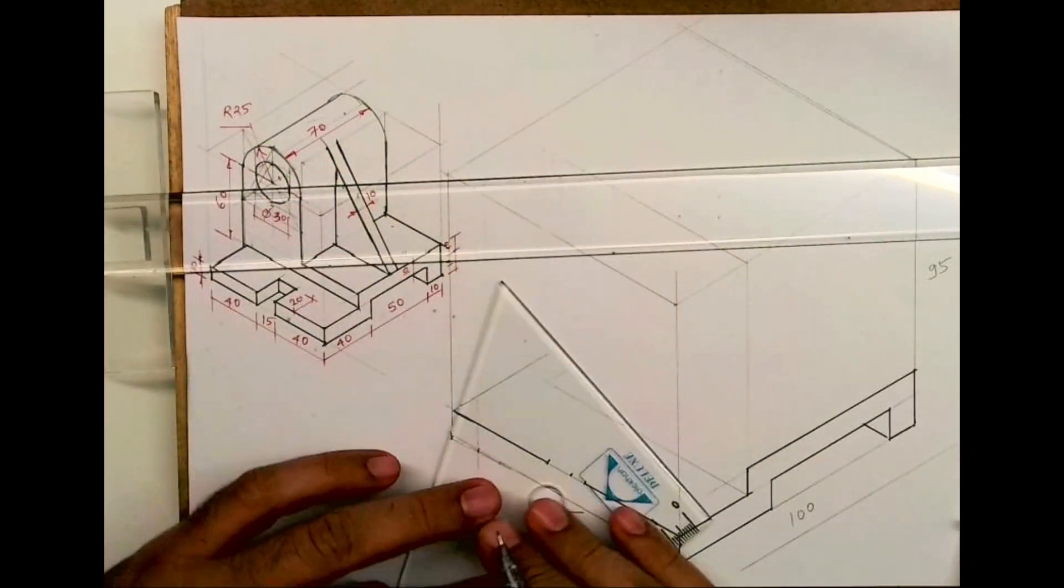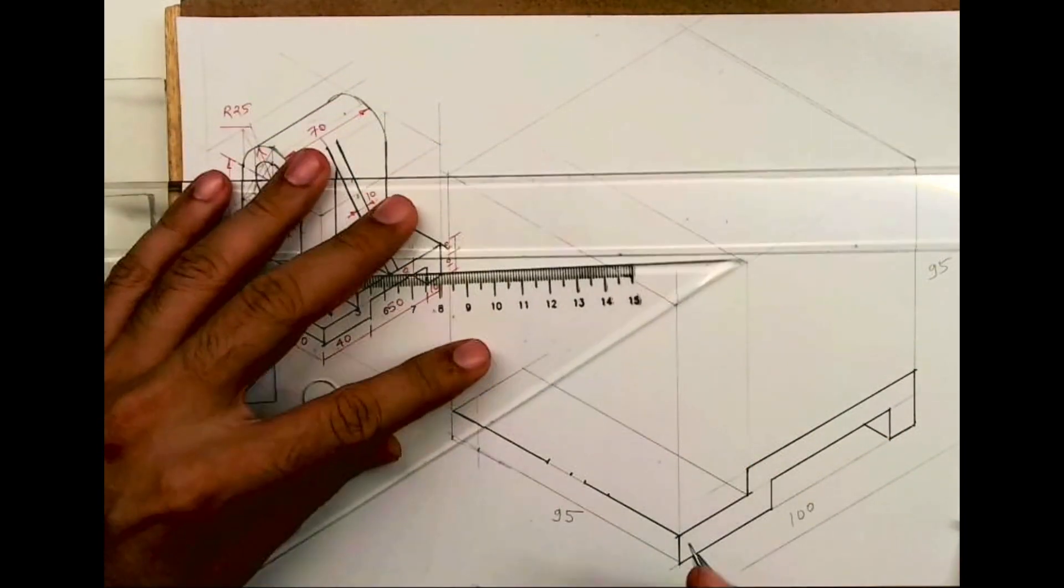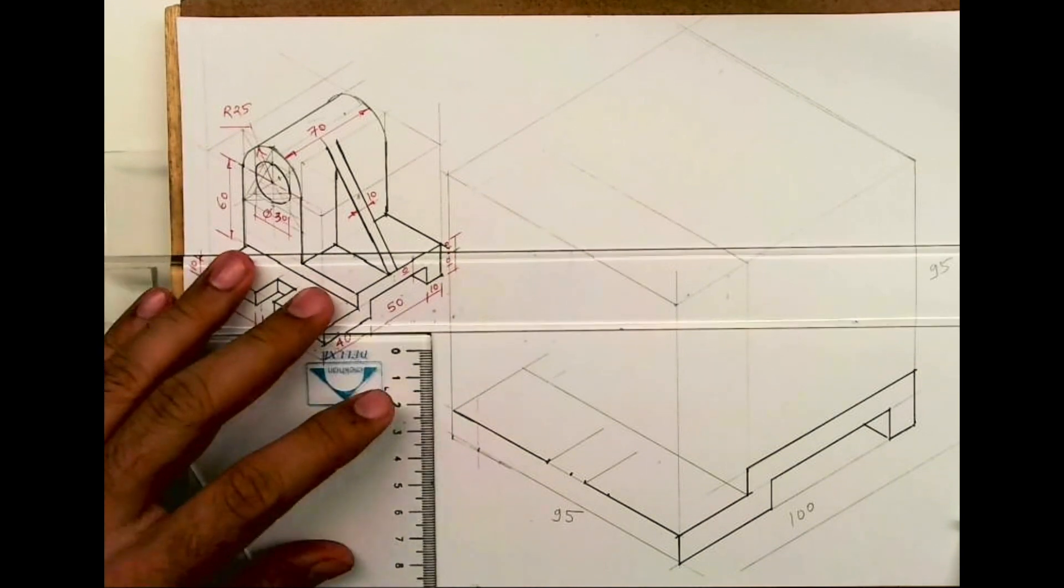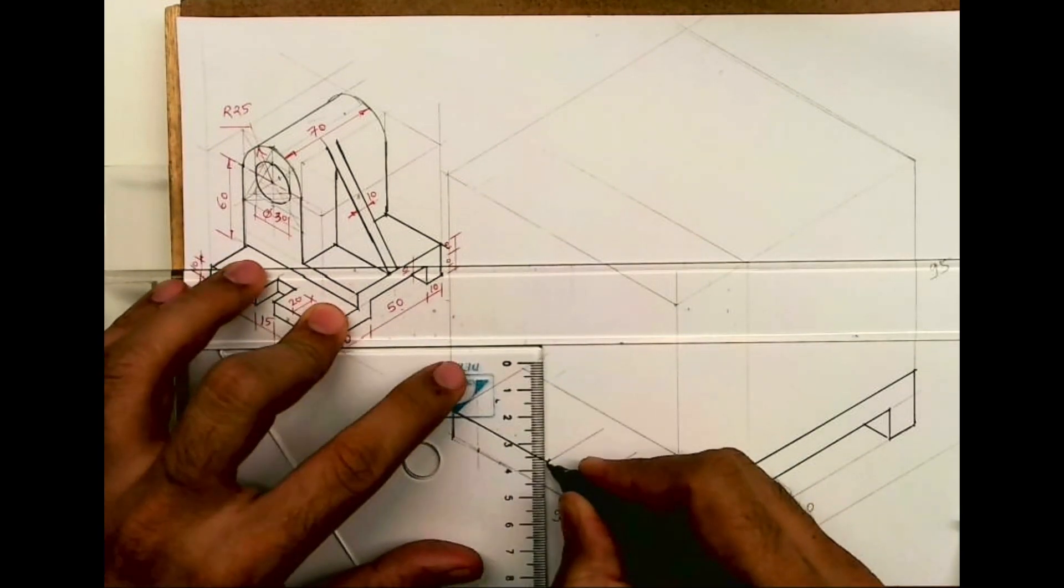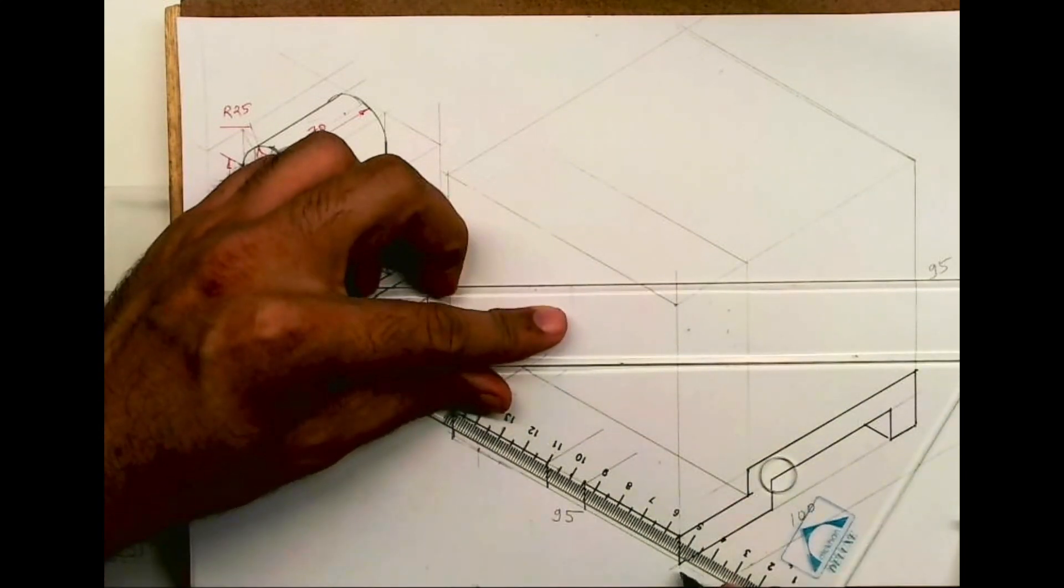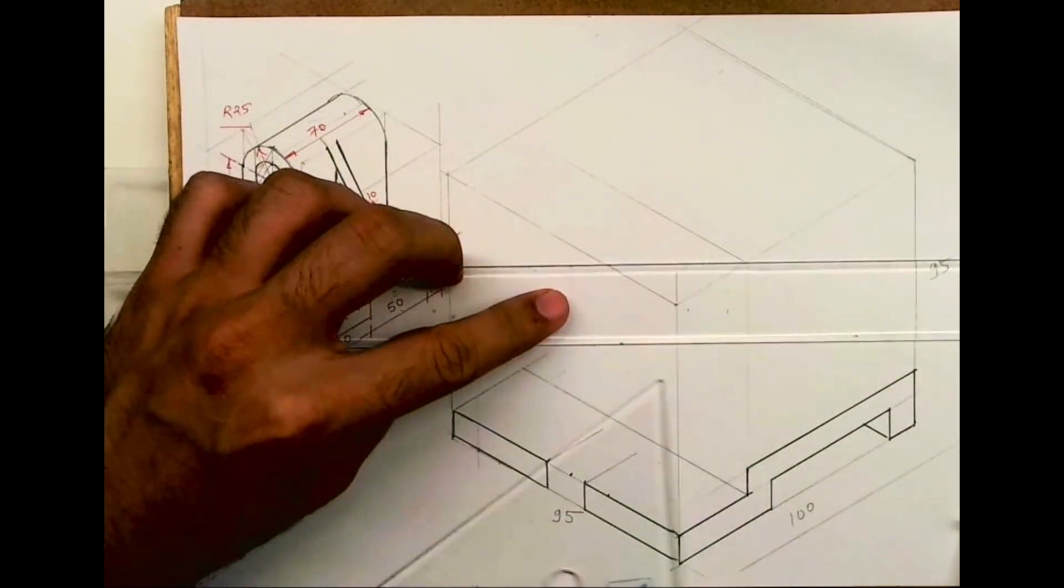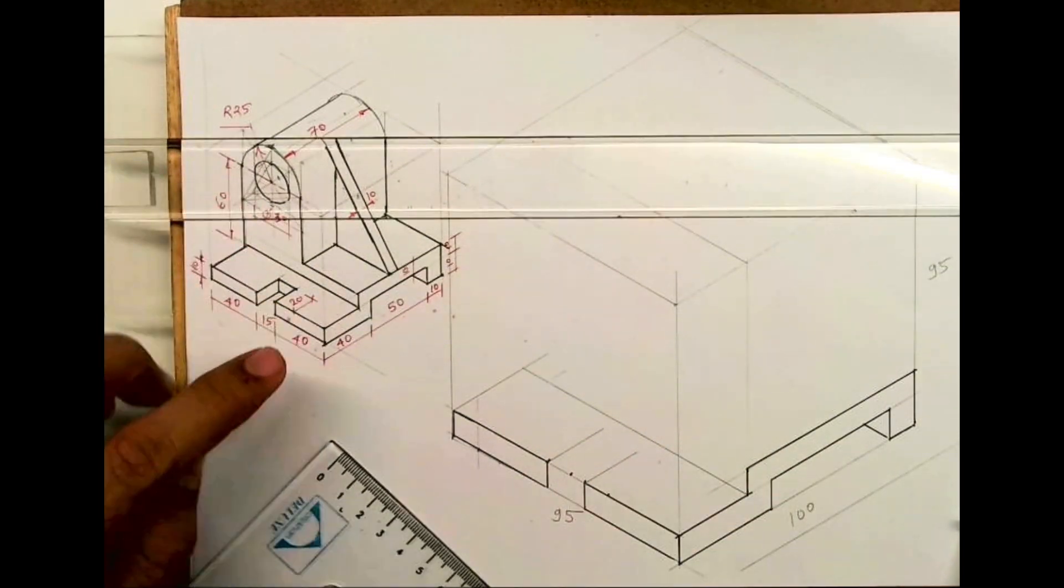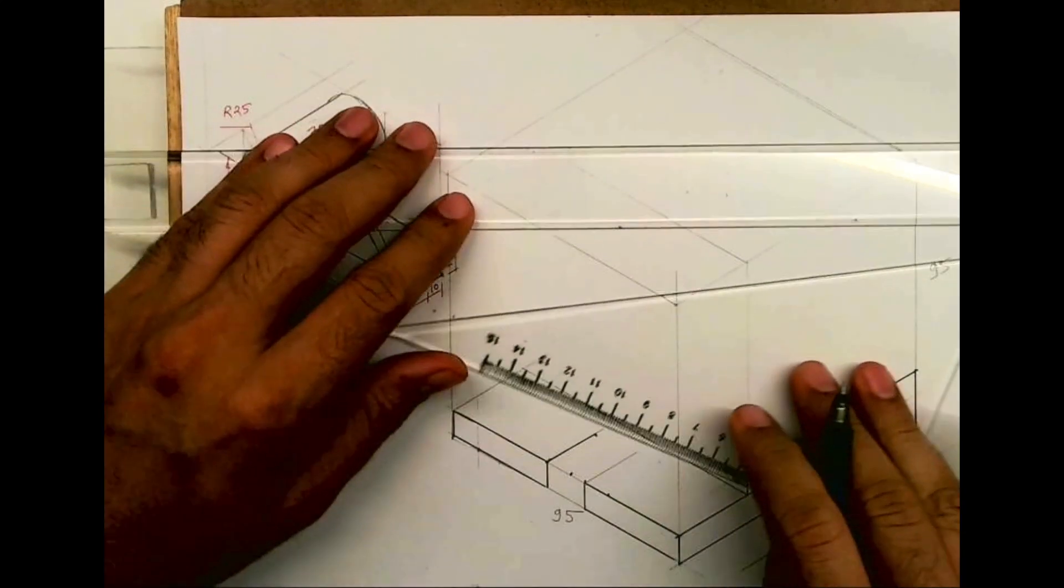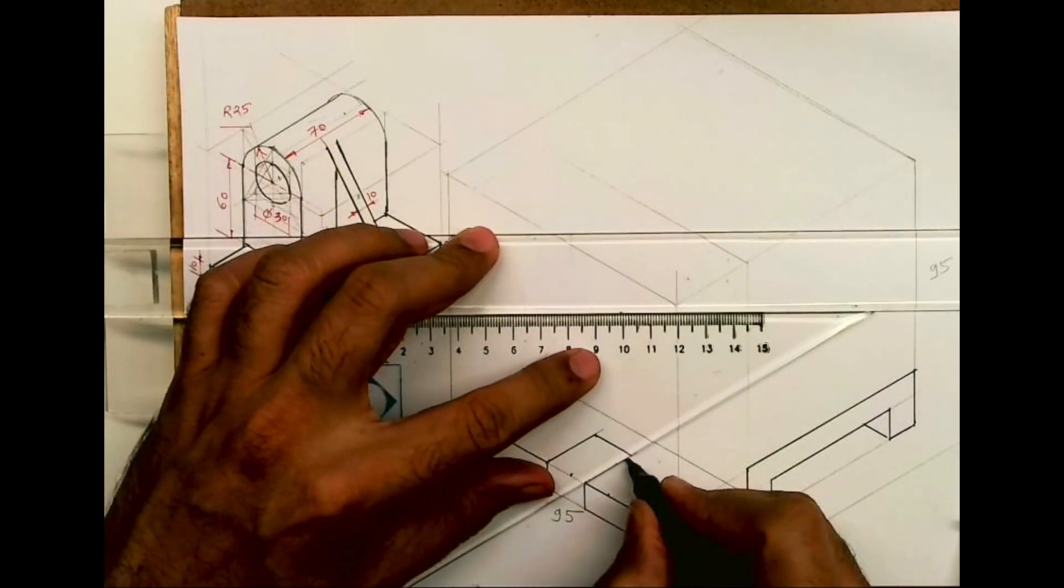Then you go inside, then you draw line, then you draw line inside. How much would it be? 20. This is straight. So how much is this? 20. So this is how you will get that slot.